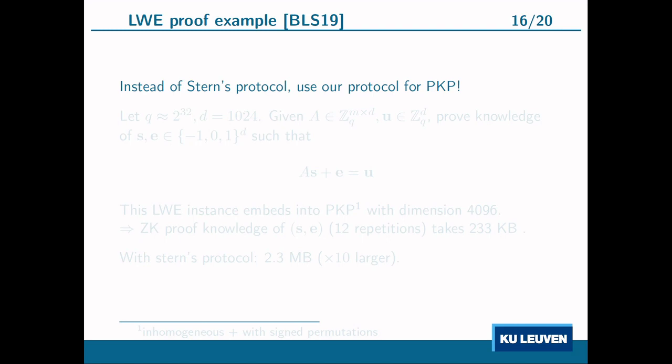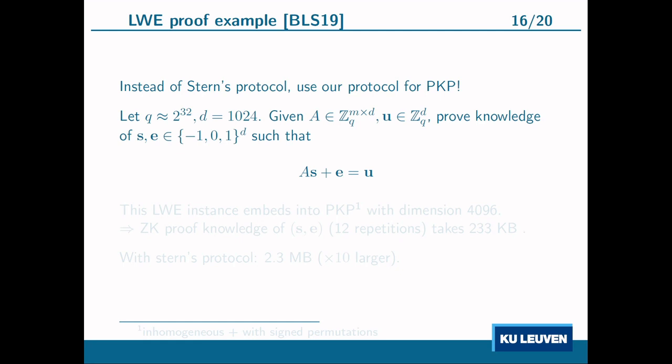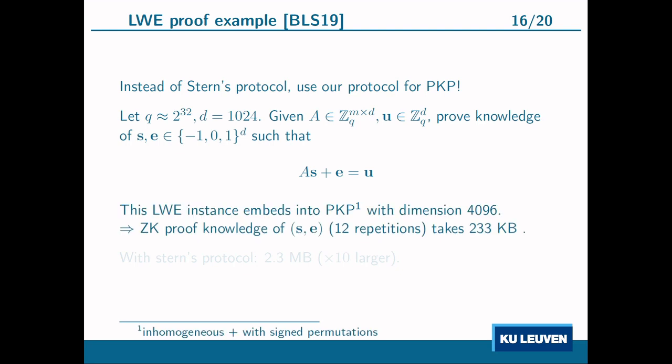Since the relation that Stern's protocol proves is so close to the PKP relation, we can plug in our PKP sigma protocol instead and get a large decrease in proof size. As a concrete example for LWE with a 32-bit modulus, dimension 1024, and secret/error entries in {-1, 0, 1}, the problem can be reformulated as a PKP-like problem of dimension 496. Using our sigma protocol, the proof is only 233 kilobytes, compared to 2.3 megabytes with Stern's protocol — a factor of 10 reduction. For a more detailed comparison, please refer to the paper.